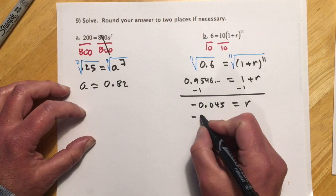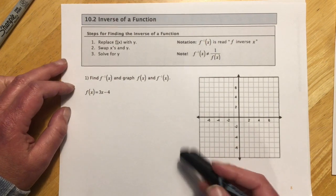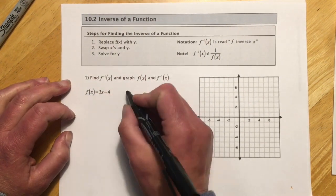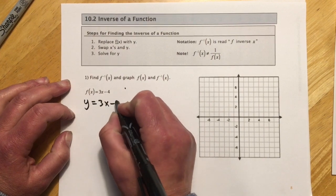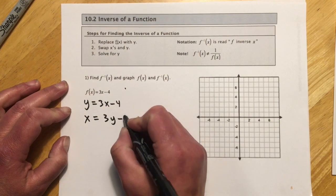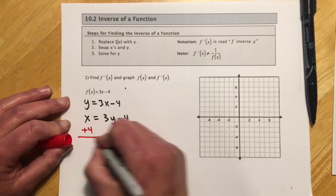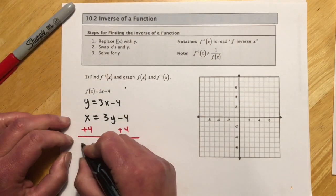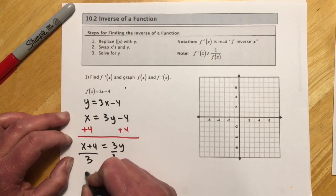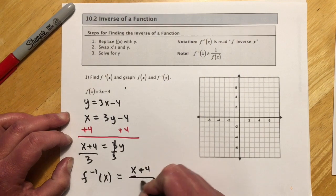Next we have section 10.2, which is finding the inverse of a function. Remember, the first thing we do when we see f of x is think of it as y. For example, y equals 3x minus 4. To find the inverse, we swap x and y, then resolve for y. Add 4 over to get x plus 4 equals 3y, then divide by 3. So f inverse of x equals (x plus 4) over 3.